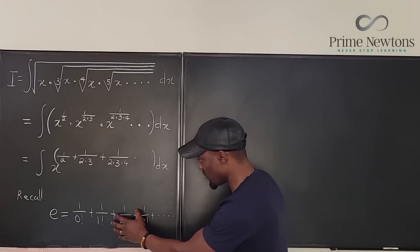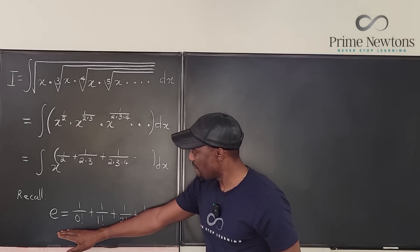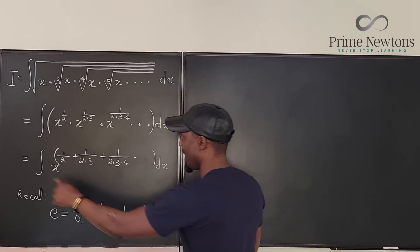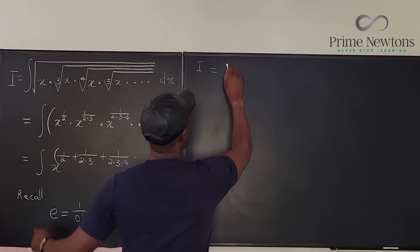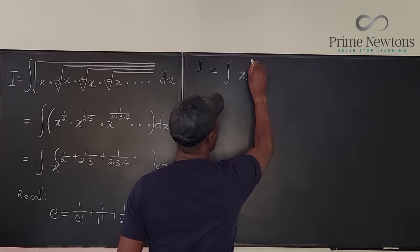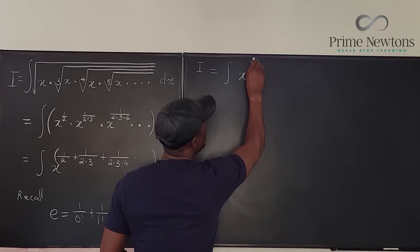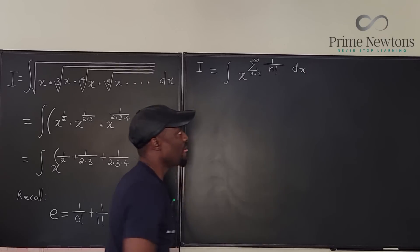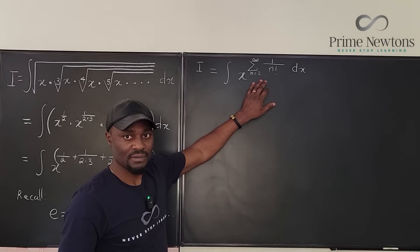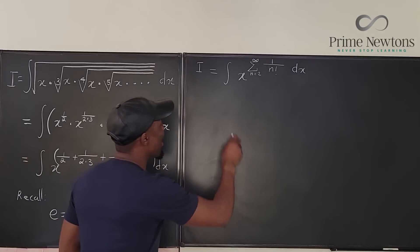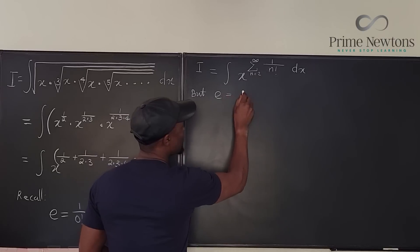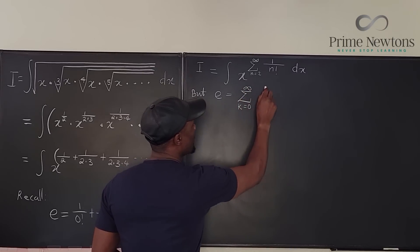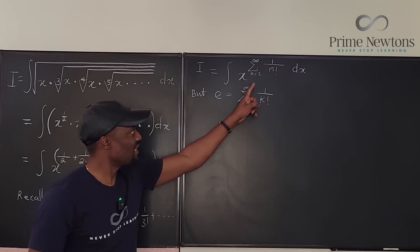It's more or less like we have e minus the first two parts, which is what we have here. So we can say that the integral I is the integral of X raised to the power of the sum from n equals 2 to infinity of 1/n!. That is the short form of this integral. We also know that e equals the sum from k equals 0 to infinity of 1/k! — there's just a slight difference between these two.